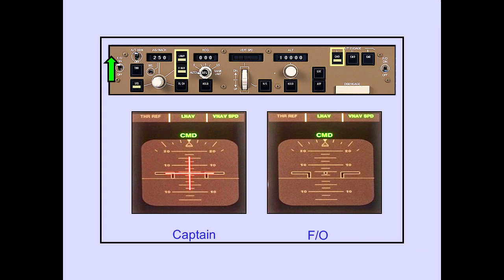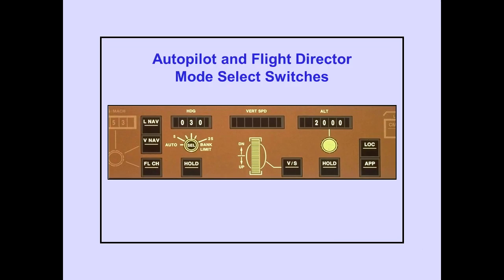When a flight director is turned on and an autopilot is in command, the flight director operates in the same mode as the autopilot. When an autopilot is in command, that is displayed on the PFD. These mode select switches control the autopilot and flight director operations.